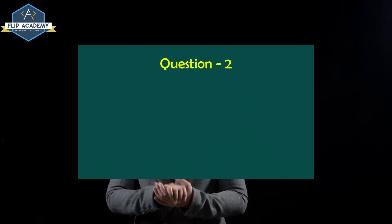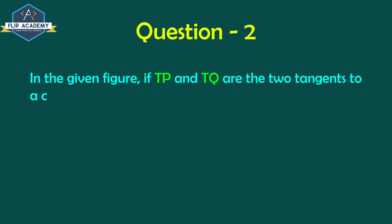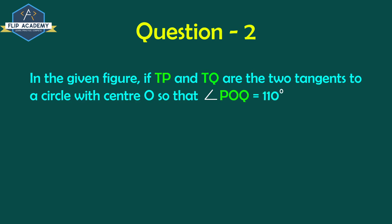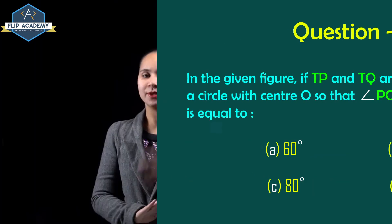Circles exercise 10.2, question number 2. In the given figure, if TP and TQ are two tangents to a circle with center O such that angle POQ is equal to 110 degrees, then angle PTQ is equal to: option A 60°, option B 70°, option C 80°, option D 90°.